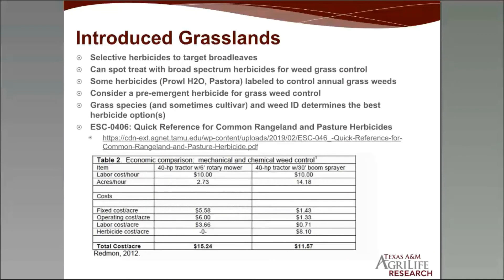In introduced grasslands, there are selective herbicides to target broadleaves. You can spot treat with broad-spectrum herbicides for weed grass control. Products like Peral H2O and Pastora are labeled to control annual grass weeds within a perennial grass pasture. You might also consider adding a pre-emergent herbicide for grass weed control. The grass species and even the cultivar, along with weed identification, will determine your best herbicide option. A web link to an excellent extension publication provides more information on specific herbicides for different grasses and weeds.